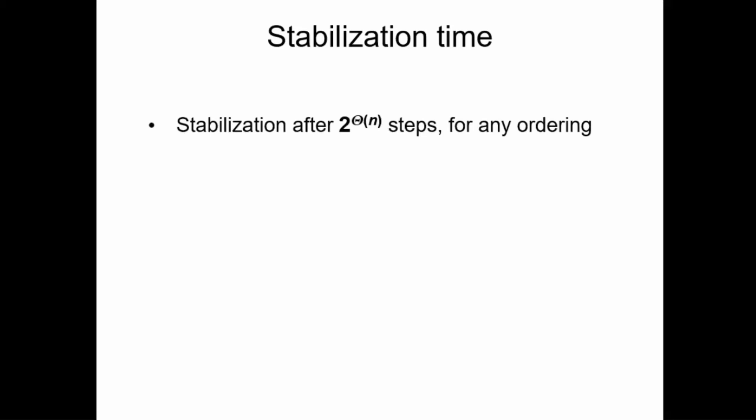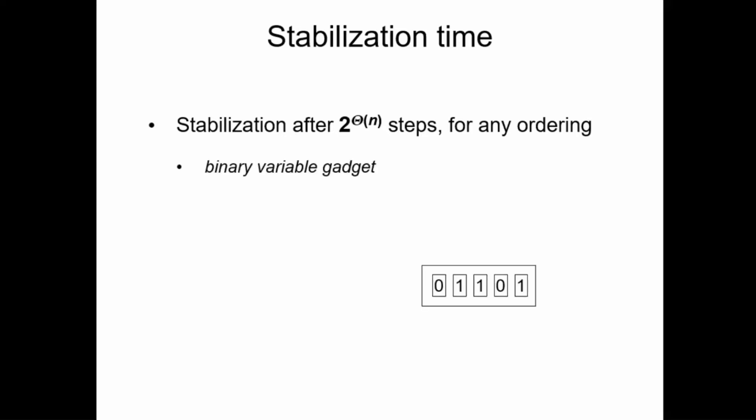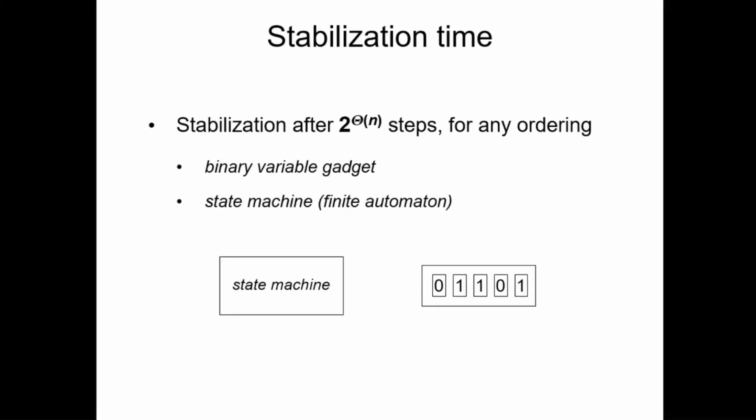Given that even a small part of the system can produce such an infinite behavior, it's hard to say many meaningful things about stabilization time in general. However, we note that the process can also last very long when we do have stabilization. More specifically, we can develop a construction where the process takes an exponential number of steps but does stabilize eventually, and this holds for any possible ordering in the system. The main idea is that we can come up with a gadget that represents a mutable binary variable, and also gadgets that can capture states and transitions between these states, allowing us to simulate a state machine or a finite automaton. Using these tools, we can build a binary counter on theta n bits, which counts from zero to the maximum value on these bits, after which the network stabilizes.